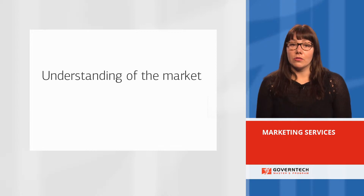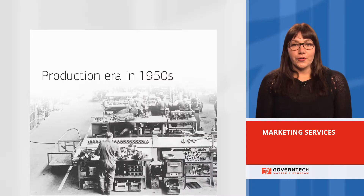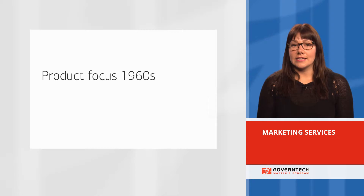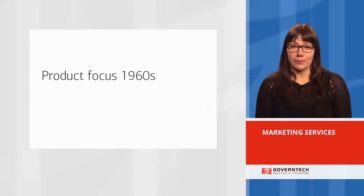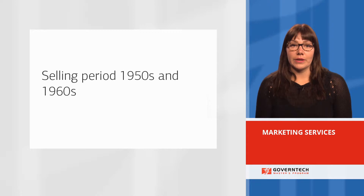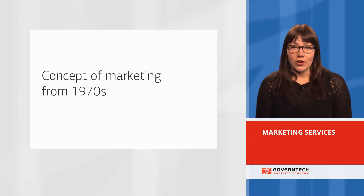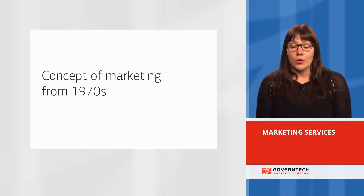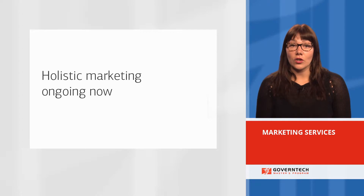Marketing can be defined in several ways. There were five main areas. Firstly, the production era that lasted until the 1950s, where different production methods mattered. Secondly, the product focus that lasted until the 1960s, where the quality of the product mattered. Thirdly, the selling period in the 1950s and 60s, where different selling methods were focused on. Then the concept of marketing, prevalent from the 1970s until now, where customers' needs and wants matter. And lastly, the concept of holistic marketing, ongoing now in the 21st century, where everything matters.